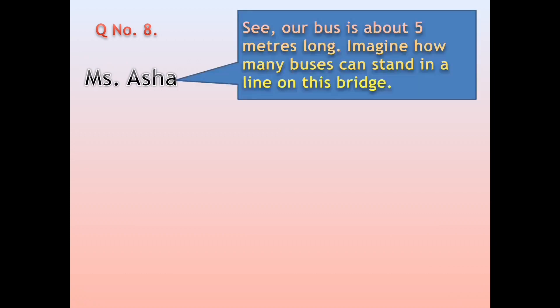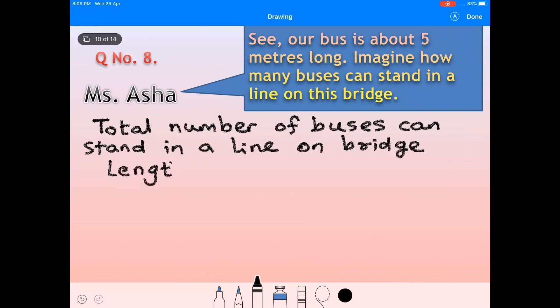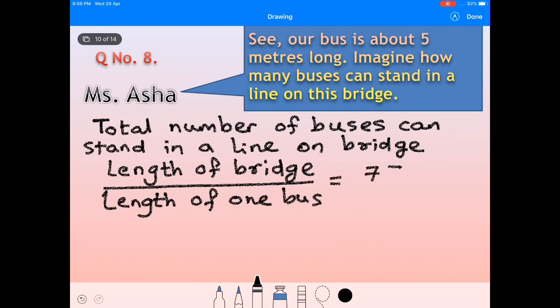Question Number 8. Miss Asha: 'See, our bus is about five meters long. Imagine how many buses can stand in a line on this bridge?' Total number of buses that can stand in a line on the bridge equals length of bridge divided by length of one bus, equals 756.82 divided by 5. It is about 151 buses.